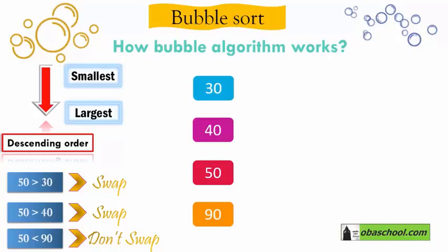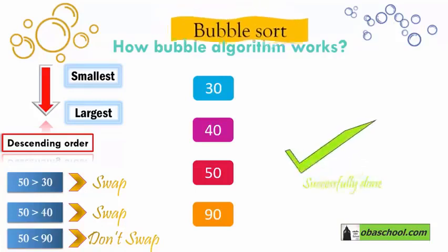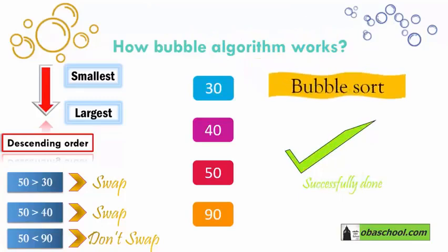Now look at the final result: we have 30, 40, 50, 90. That means the bubble sort algorithm has been successfully completed.